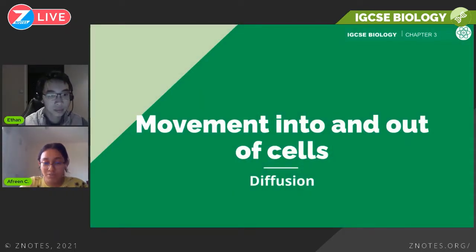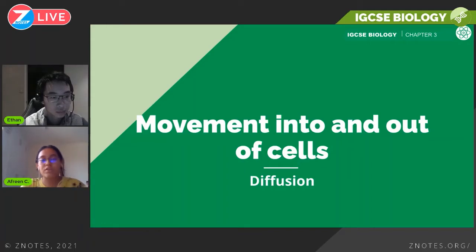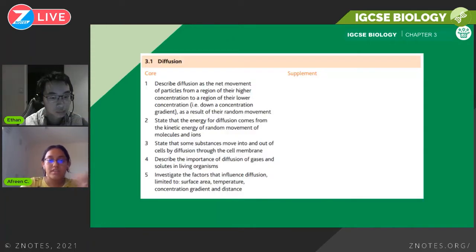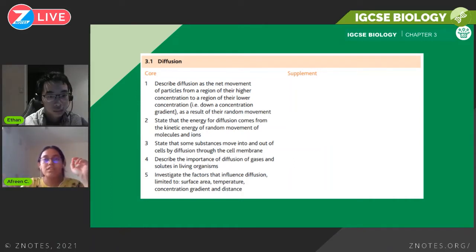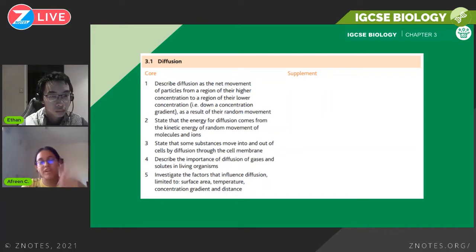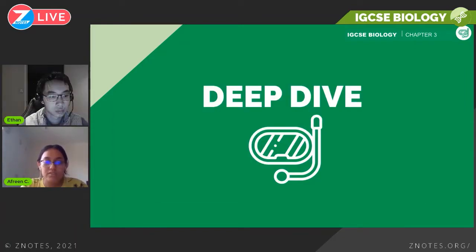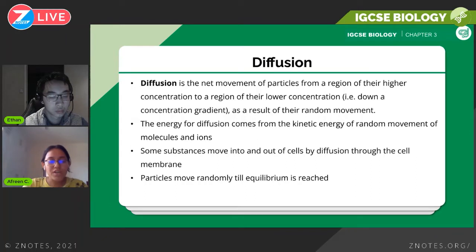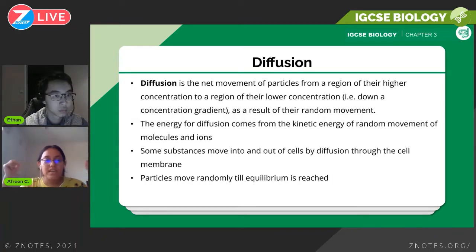This is Chapter 3 in IGCSE biology. We'll be looking at three main processes here. The first part of Chapter 3 talks about diffusion. The syllabus states that you need to know the definition of diffusion, why diffusion is important in organisms, and the factors affecting the rate of diffusion.